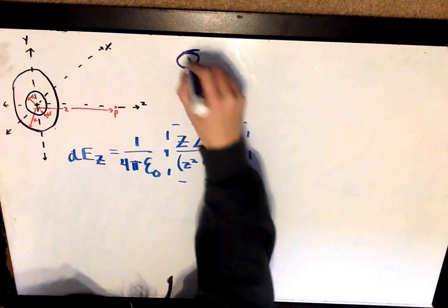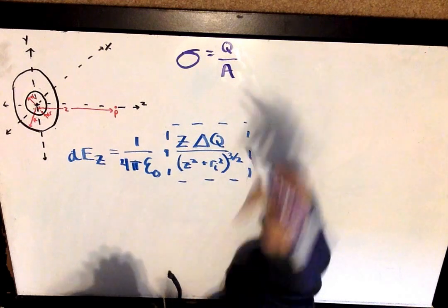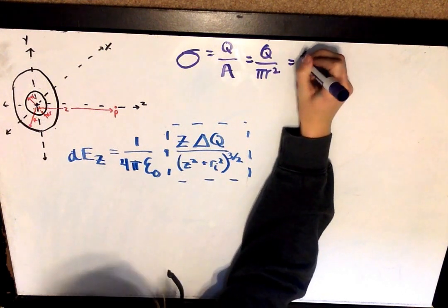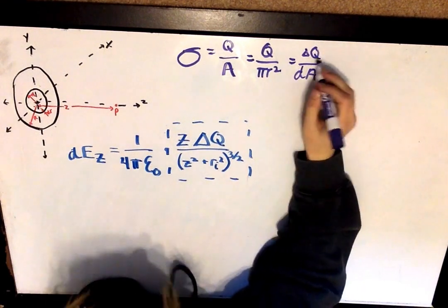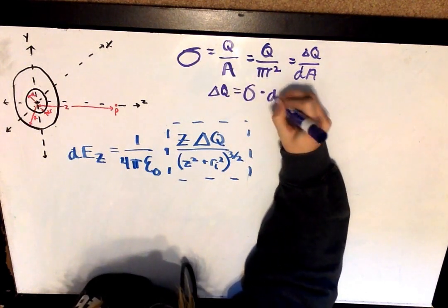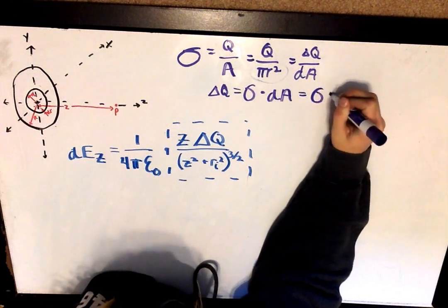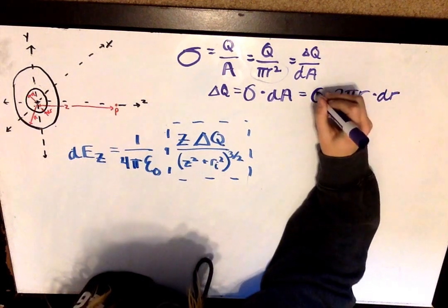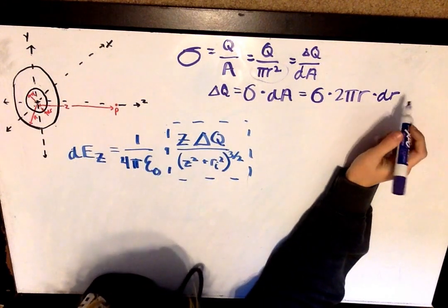Area charge density, written with the symbol σ, equals q over A, which equals q over πr². For the tiny piece of the ring, it equals delta q over dA. Rearranging for delta q, we get delta q equals area charge density times dA. Since A equals πr², dA equals the derivative, which is 2πr dr — because 2πr is the circumference times dr, the thickness of the ring — giving us the area of this thin ring.